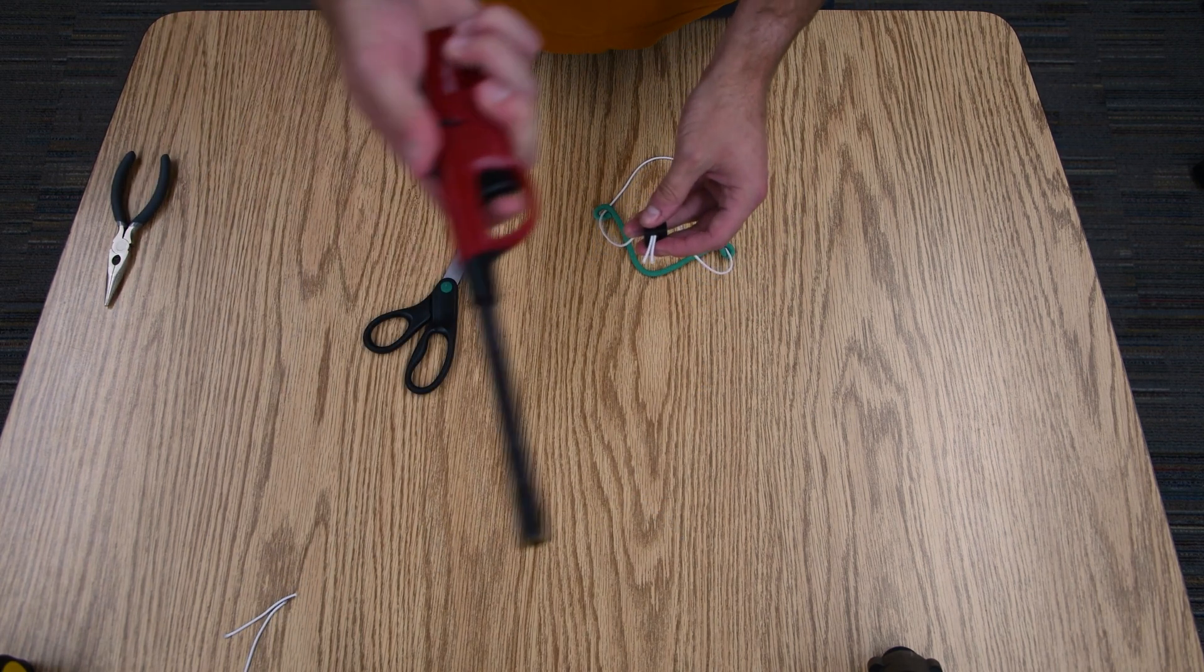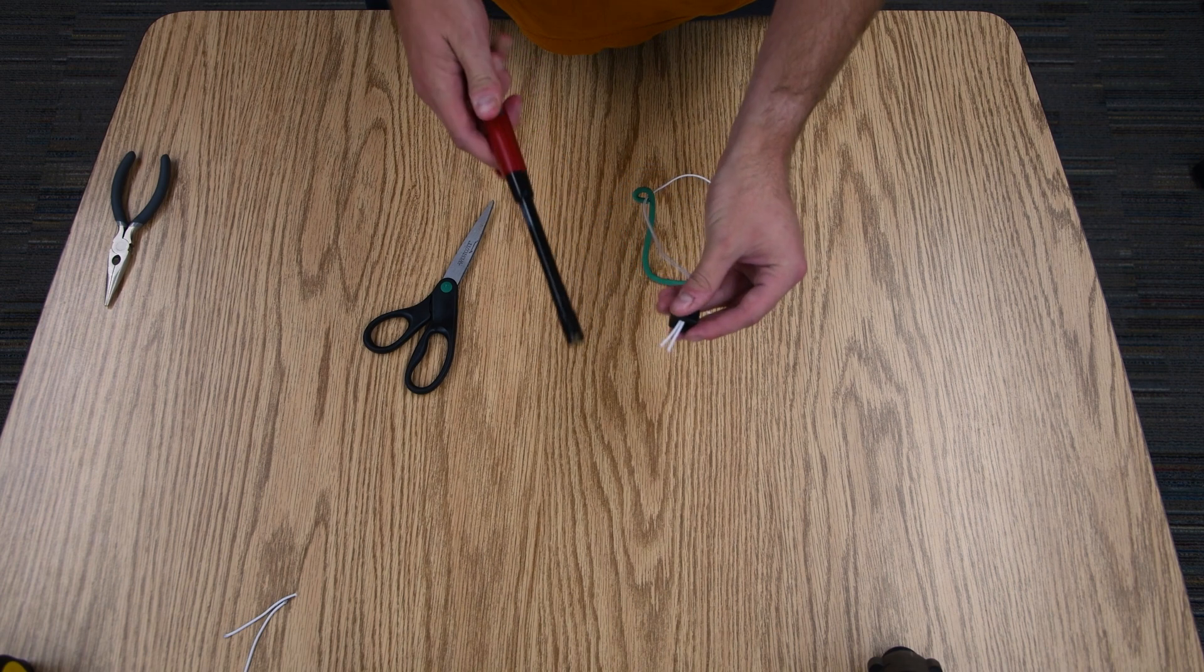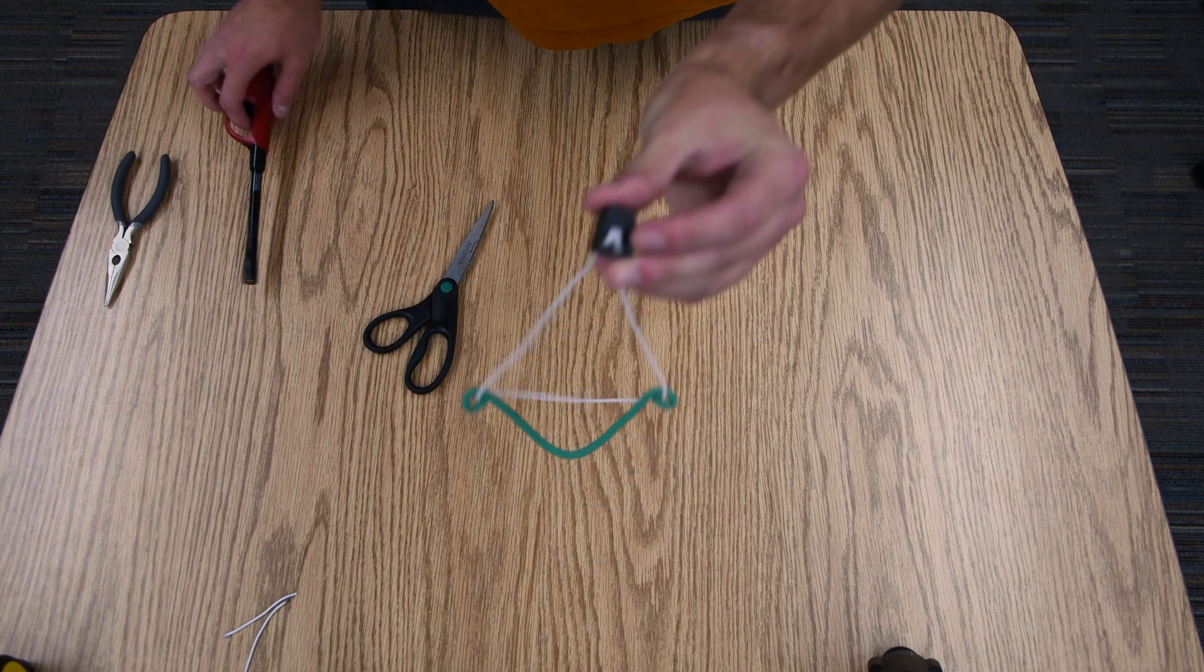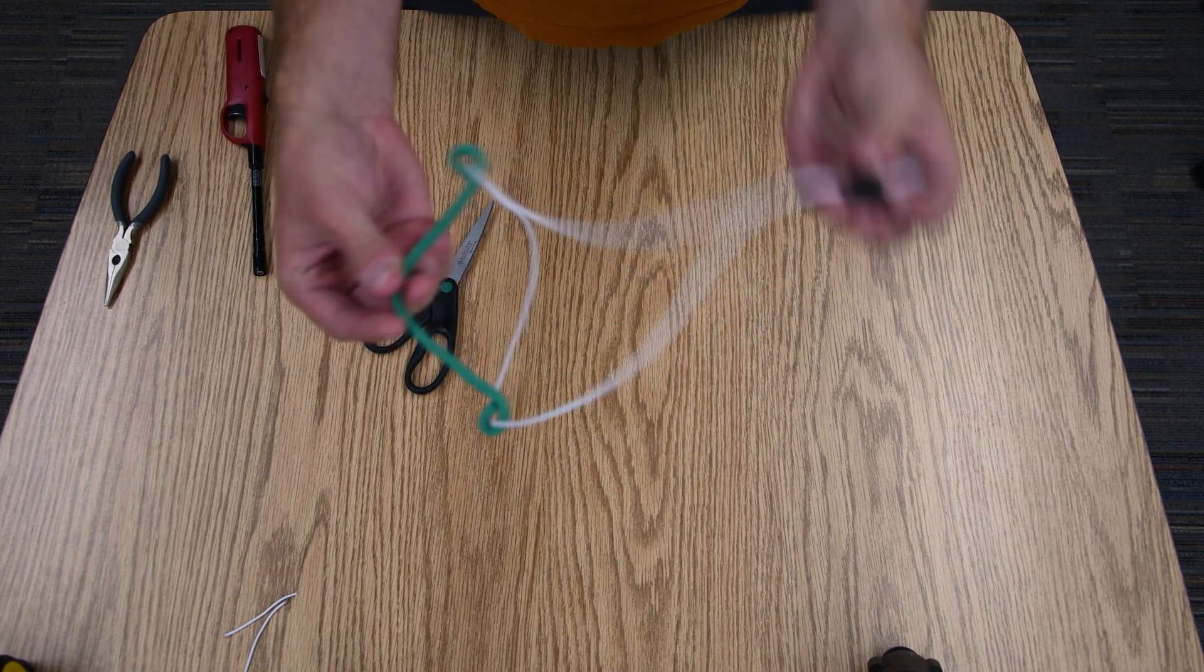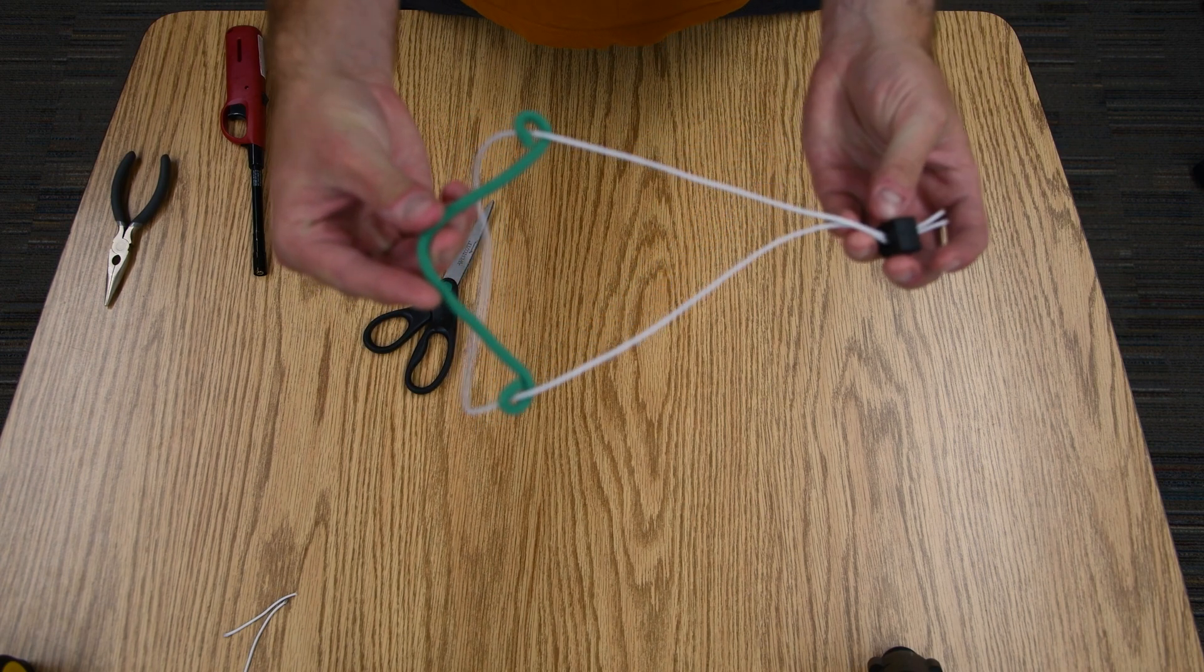And then you can take a lighter and seal the frayed end of the elastic. And so now we have our single band mask fitter complete.